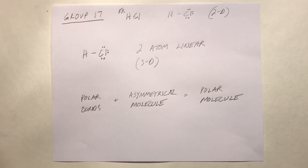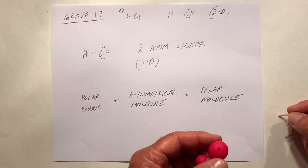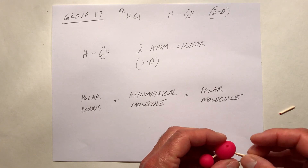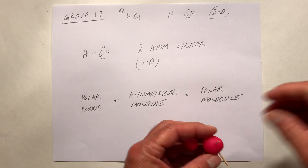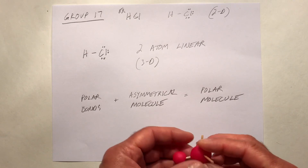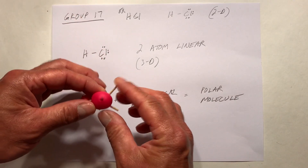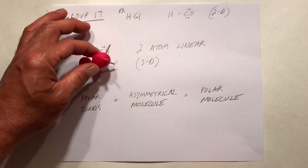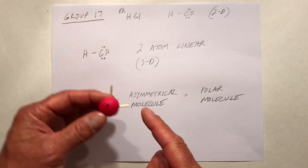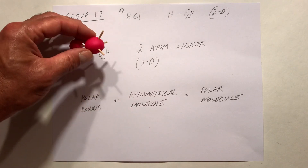The difference between this two-atom linear molecule and the earlier one is that here we have some non-bonding electrons. Those are represented by toothpicks, where each toothpick represents a pair of non-bonding electrons.